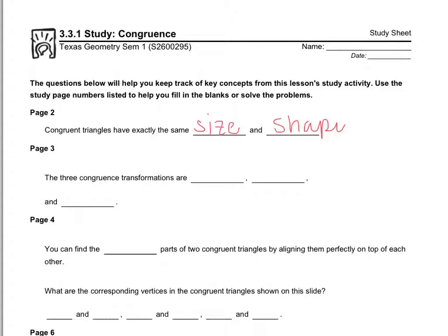There are four transformations: rotations, reflections, dilations, and translations. Only three of them are considered congruence transformations because they don't change the shape, and those are rotation, reflection, and translation.